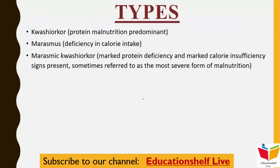There are three types of PEM: Kwashiorkor, Marasmus, and Marasmic-Kwashiorkor. Kwashiorkor is protein malnutrition predominant.